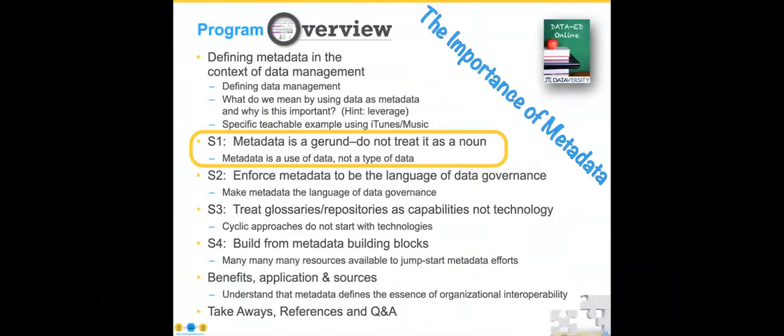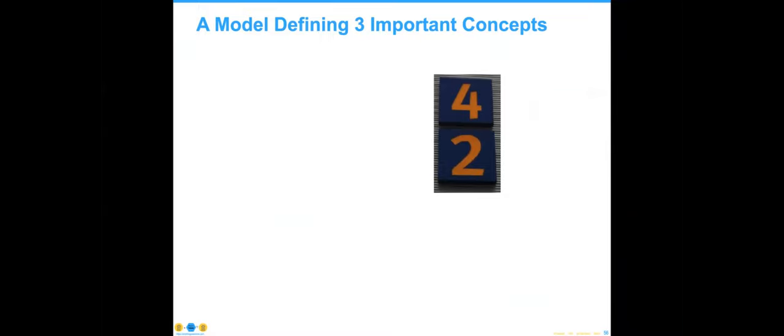Let's move on to strategy number two: metadata must be the language of data governance. Again, that understanding is critical. Let me take you briefly through a model of what data is. I'm going to tell you upfront that 42 is not Jackie Robinson's jersey number — it is in fact the meaning of life, the universe, and everything. That will only make sense if you've read The Hitchhiker's Guide to the Galaxy, where the answer to life, the universe and everything is 42.